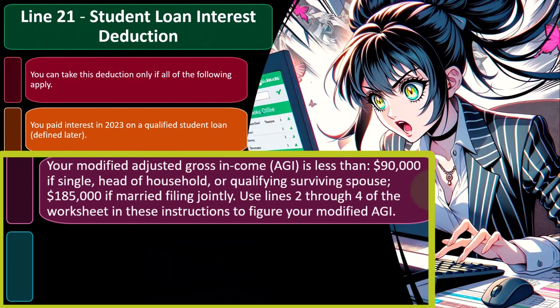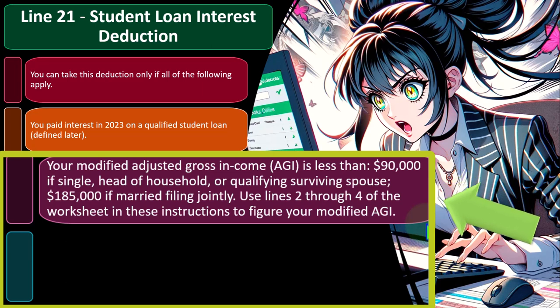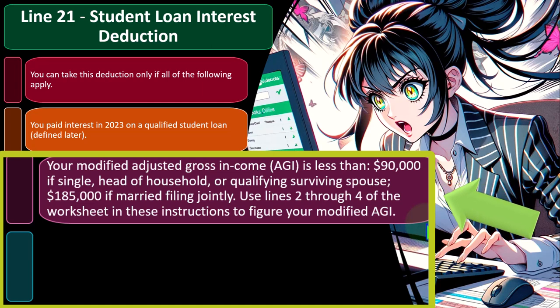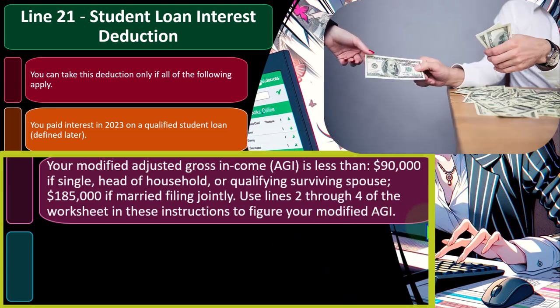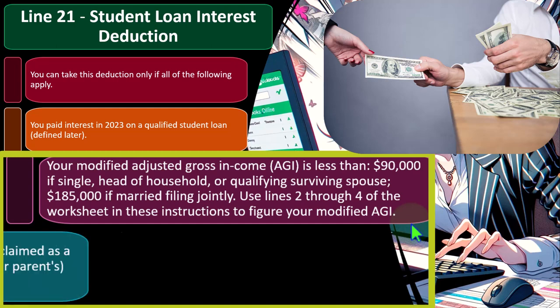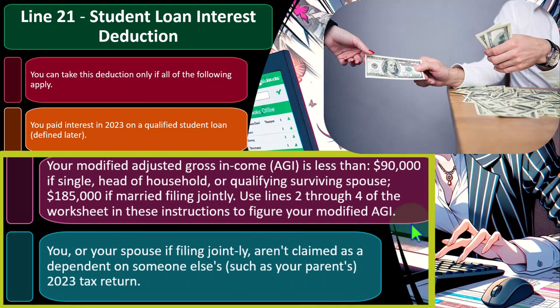Use lines 2 through 4 of the worksheet in the instructions to figure your modified adjusted gross income. Why does it say modified? They typically start with AGI and then modify it from there, partly because this deduction is an above-the-line deduction that impacts adjusted gross income itself — creating a circular reference when figuring the phase-out if we don't make some adjustment. We'll talk more about that in the software example in a future presentation.